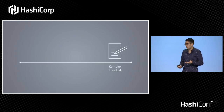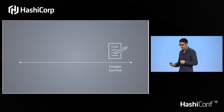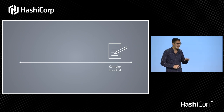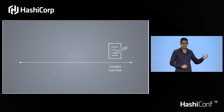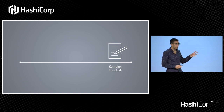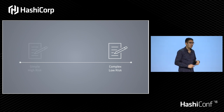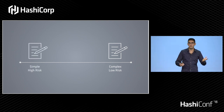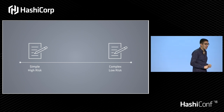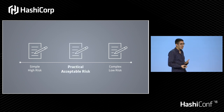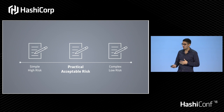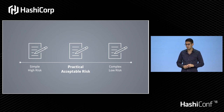What you find is there actually is no such thing as a perfect policy. Like everything in life, there are trade-offs. On one side, we have a complex but low-risk policy — I write a policy unique for every single client that perfectly and explicitly says what you have access to. This is a very low-risk policy, but it would be a nightmare to administer. On the other hand, I have a very simple policy: everyone in my system is root. It's extremely simple, extremely high-risk — it's a terrible idea. What you find in real life is something in the middle: a practical policy with an acceptable level of risk and an acceptable level of complexity.